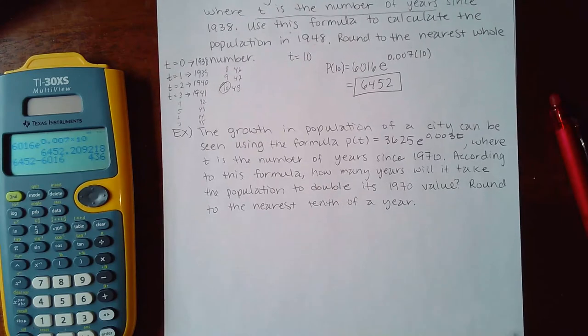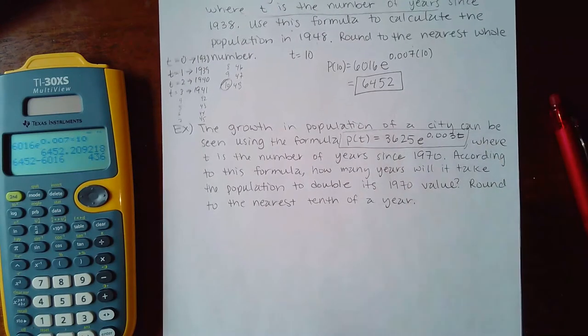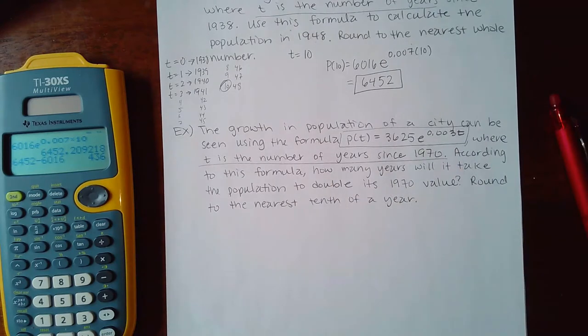Okay, the next example says the growth in population of a city can be seen using this formula where t is the number of years since 1970. According to this formula, how many years will it take the population to double its 1970 value? Round to the nearest tenth of a year.